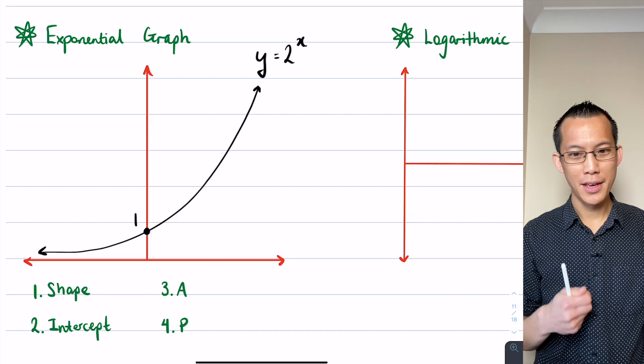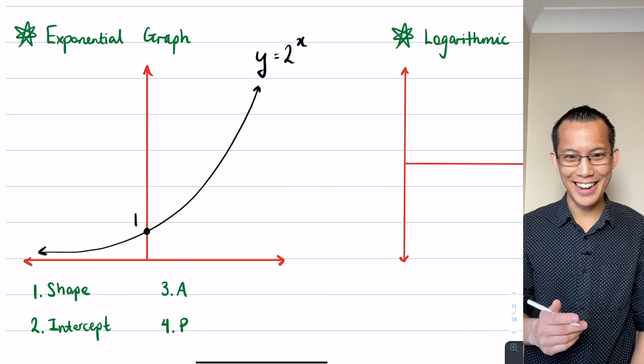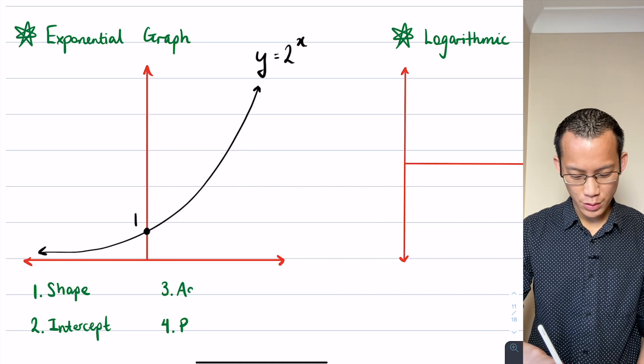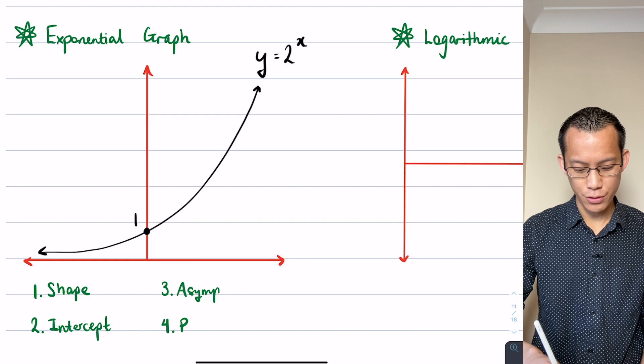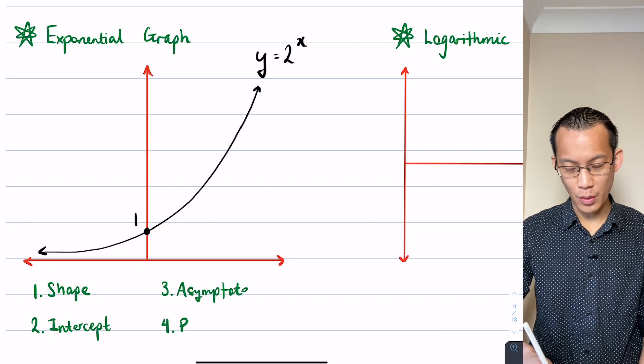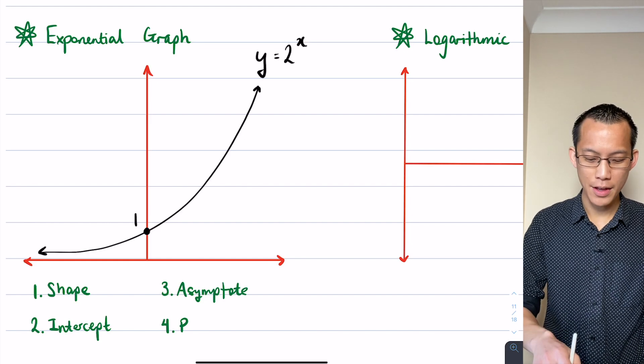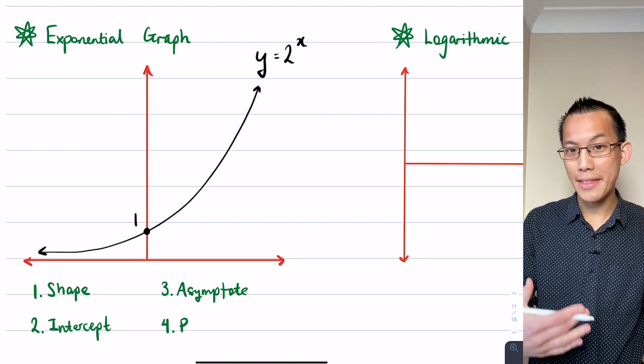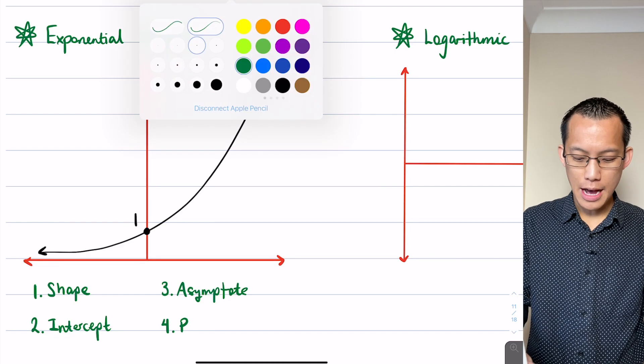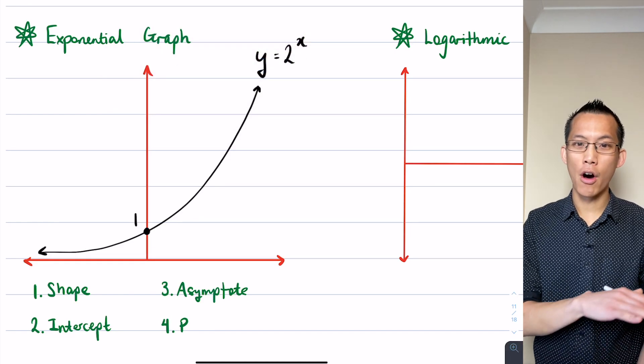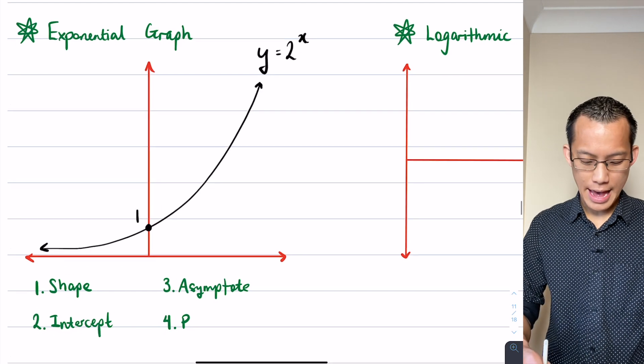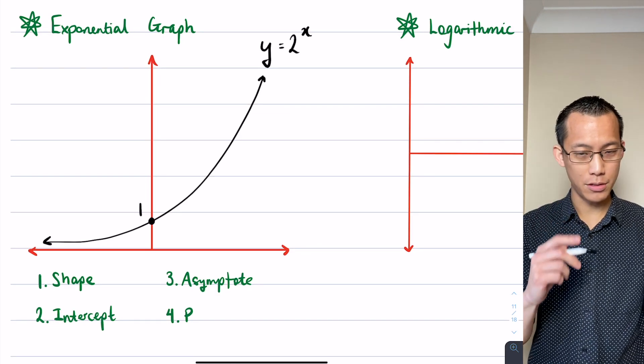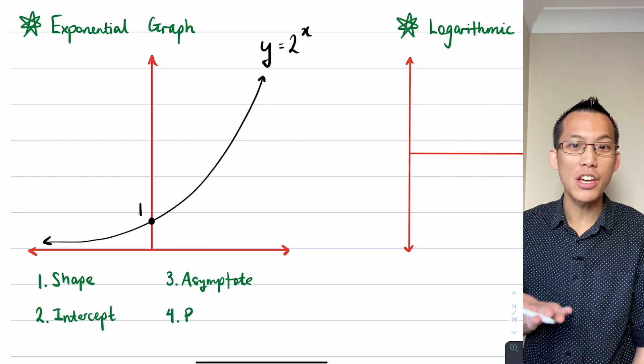The reason for that is because of the third feature, starts with an A - it is of course the asymptote. It's really crucial especially now that we're paying close attention to the graph that we actually mark in where the asymptote is. This is an exponential graph so it has a horizontal asymptote.